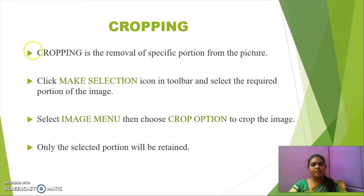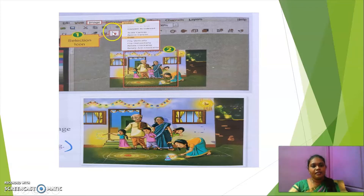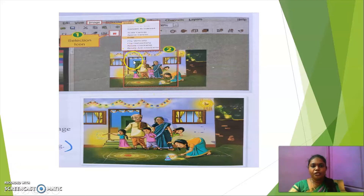To crop, first we have to click the Make Selection icon in the toolbar. This is how your MS Paint screen will appear, and we have to select the Make Selection icon from the toolbar. Once you click that, a red color selection box appears. Using your mouse, we have to click and cover the portion of the image we want to keep. The portion which appears within the red color selection box will be retained after editing.